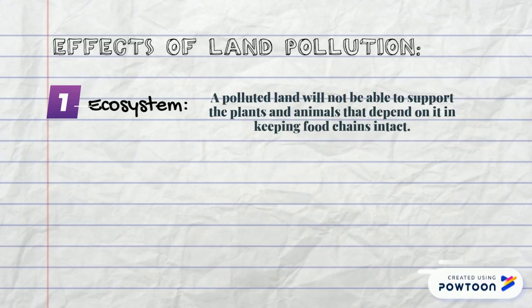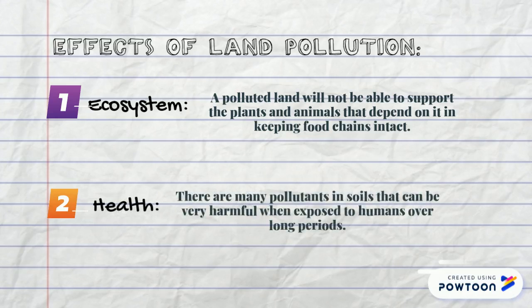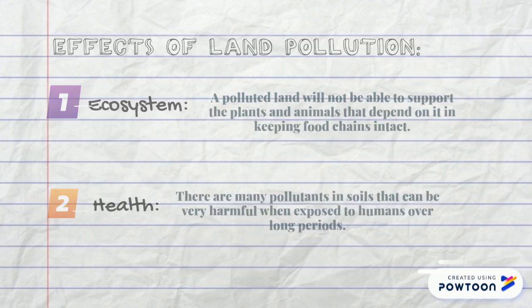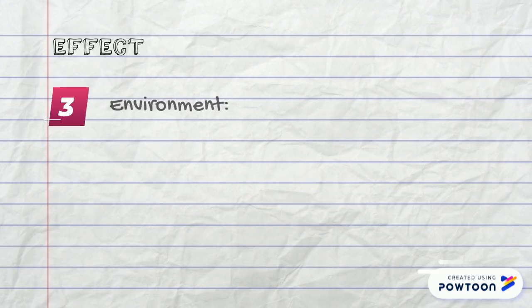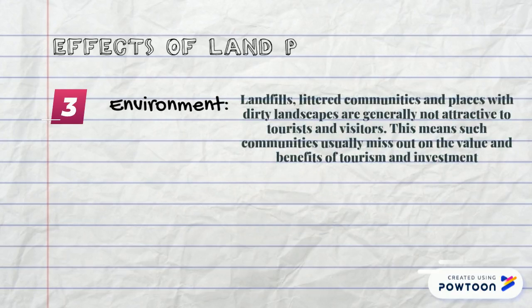Effects of land pollution. One: ecosystem — a polluted land will not be able to support the plants and animals that depend on it in keeping food chains intact. Two: health — there are many pollutants in soils that can be very harmful when exposed to humans over long periods.